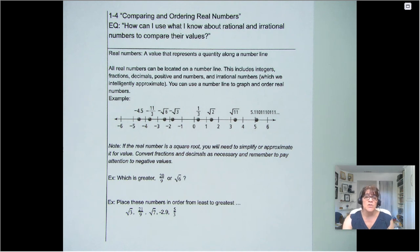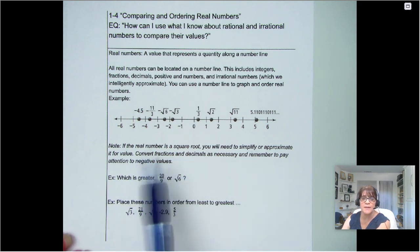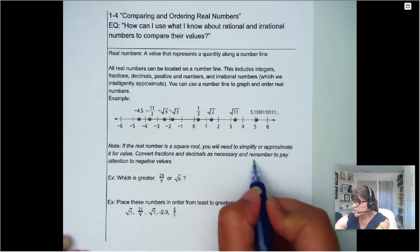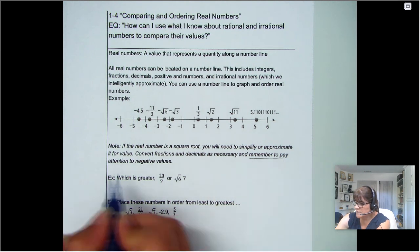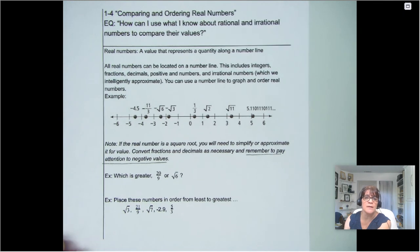Now, the irrational numbers we learned how to intelligently approximate. It's not perfect, but we can figure out where they fit in the order. Note, if the real number is a square root, you're going to need to simplify or approximate it in order to figure out where it fits. And then you're going to want to convert fractions and decimals as needed. The biggest one I want to remind all of my students to do is remember to pay attention to the negative values. Every once in a while we just forget that that negative sign is there.